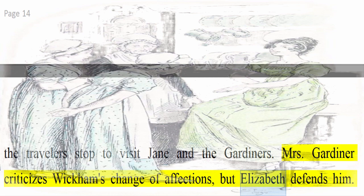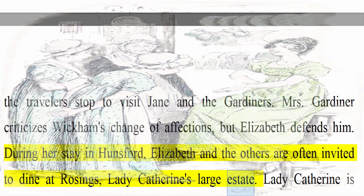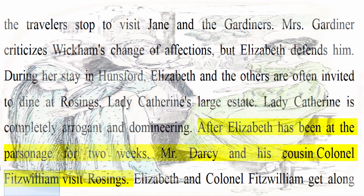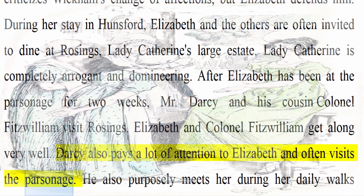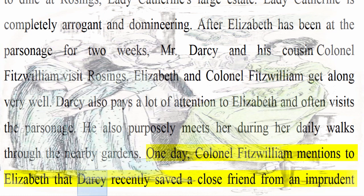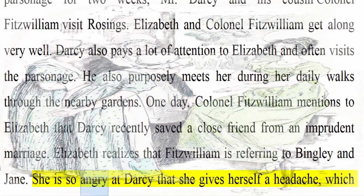During her stay in Hunsford, Elizabeth and the others are often invited to dine at Rosings, Lady Catherine's large estate. Lady Catherine is completely arrogant and domineering. After Elizabeth has been at the parsonage for two weeks, Mr. Darcy and his cousin Colonel Fitzwilliam visit Rosings. Elizabeth and Colonel Fitzwilliam get along very well. Darcy also pays a lot of attention to Elizabeth and often visits the parsonage, purposely meeting her during her daily walks through the nearby gardens. One day, Colonel Fitzwilliam mentions to Elizabeth that Darcy recently saved a close friend from an imprudent marriage. Elizabeth realises that Fitzwilliam is referring to Bingley and Jane. She is so angry at Darcy that she gives herself a headache, which keeps her from visiting Rosings that night.